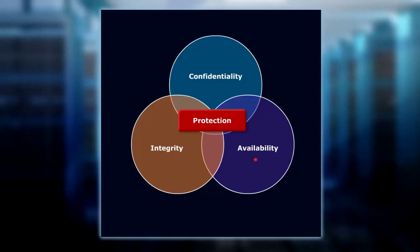Availability is about the uptime of our environment. Do we have three nines, four nines, five nines, maybe even six nines of uptime? What helps us achieve availability of our services? Making sure that we can rate limit attacks that might try to starve bandwidth, making sure that people cannot recycle or reboot our systems, making sure that people can't turn it off or crash it.